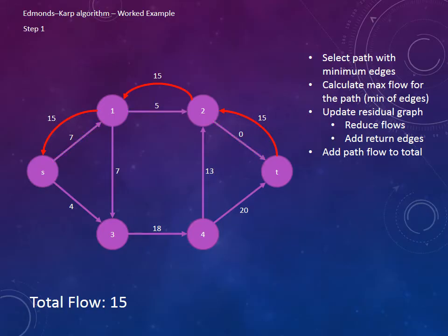Now we start the whole process again by selecting a new path with the minimum edges. The breadth-first search has chosen this one highlighted on the bottom. Now we need to calculate the maximum flow for this path, which as you remember is the minimum of all the edges. In this case, 4.